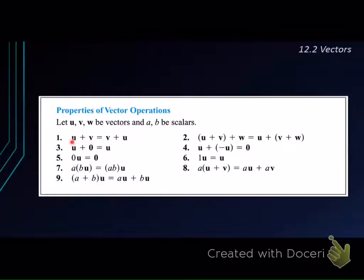It says here u plus v is equal to v plus u. It means we can interchange the order. And then number two, if we have u plus v plus w, it is the same if we just add the first two vectors compared to adding the last two vectors first. It will be the same answer eventually.